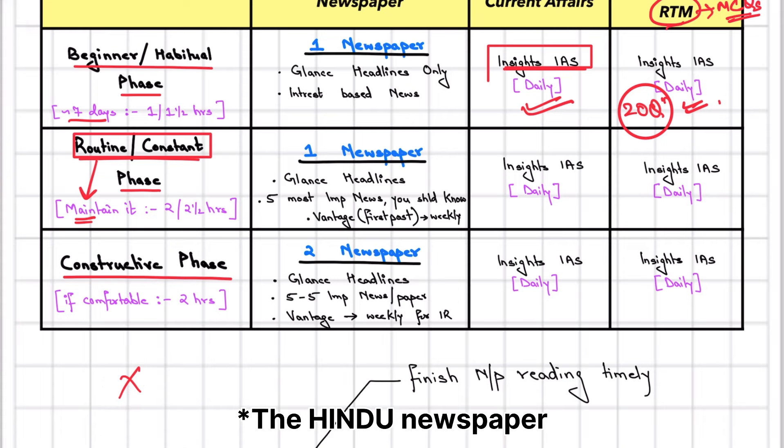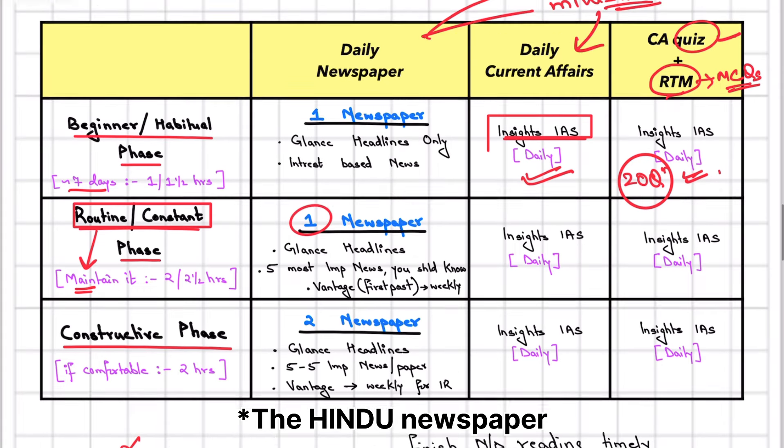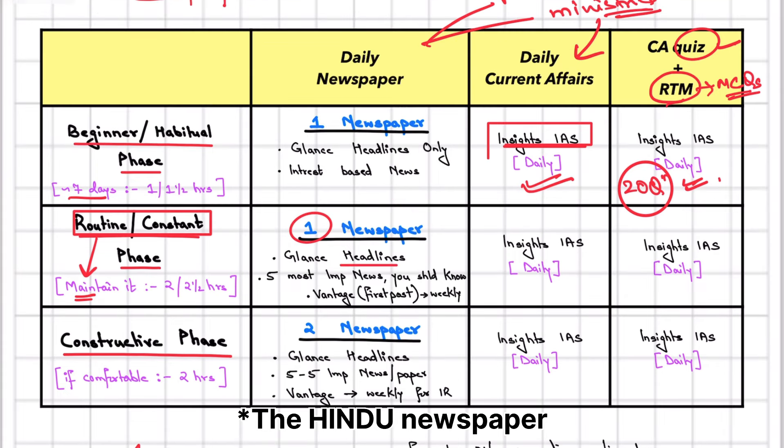So in the second phase, which is your routine or constant phase, you have to do one newspaper. Again, the same process - glance through the headlines. But after that, read at least five important news items. While glancing through the headlines, identify which news you need to know. Because it's been seven days since you started covering syllabus headings through Insights, you'll have some syllabus idea and will feel which news is important. So read that news.